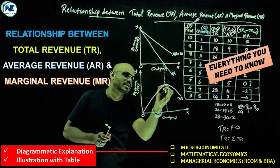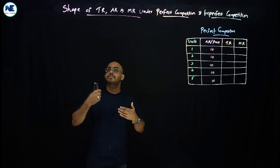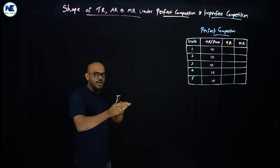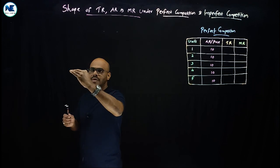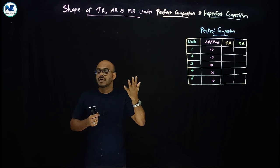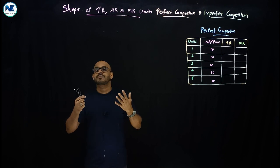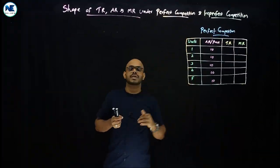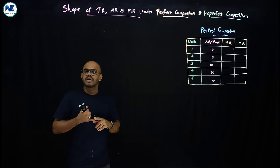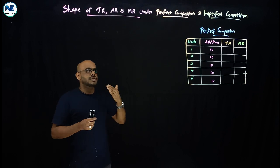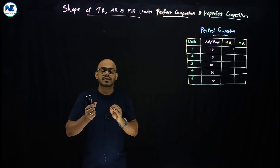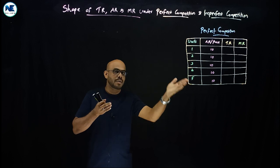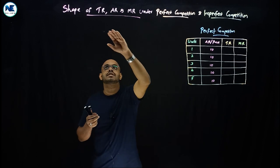We will discuss the shape of total revenue, average revenue, and marginal revenue under perfect competition, and also under imperfect competition. Imperfect competition includes monopoly, monopolistic competition, oligopoly, and so on.